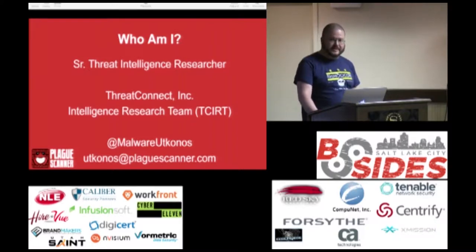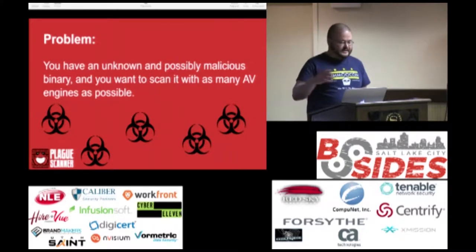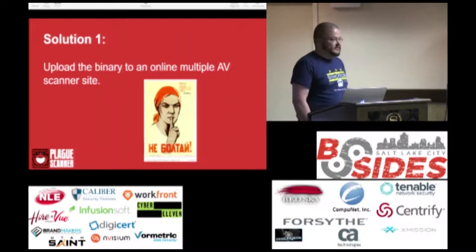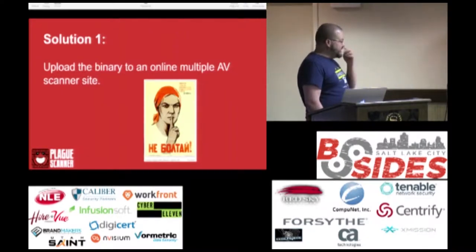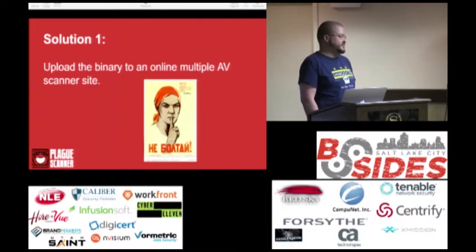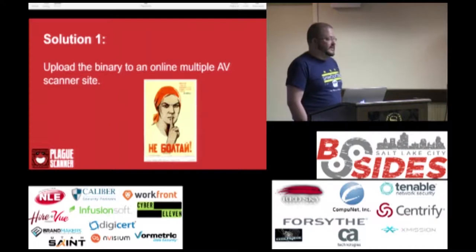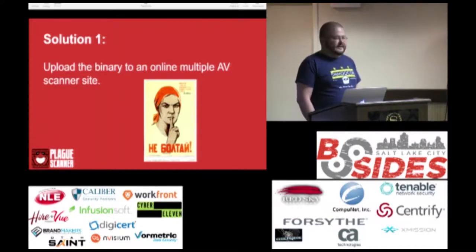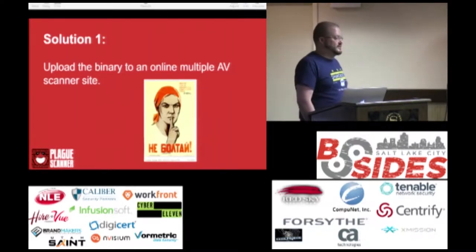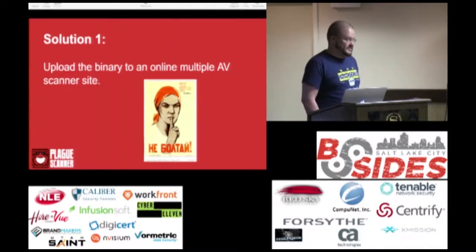Let's go into the problem. You have an unknown or malicious binary and you want to scan it with as many AV engines as possible. The first option is to upload the binary to a multiple AV scanner site online. People will put up a version of Cuckoo Sandbox online and collect binaries from it — it's a very good technique for gathering binaries. So if you've got a weaponized PDF, you don't necessarily want to upload that to any of these online sites because they are gathering the binaries, and you don't know who they're sharing those binaries with or who has access to that data. You have to trust them, and I don't trust anybody.